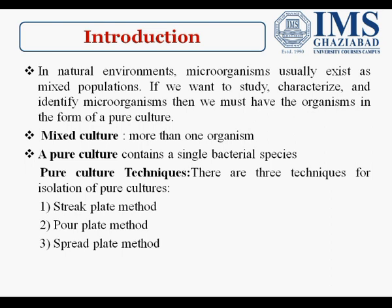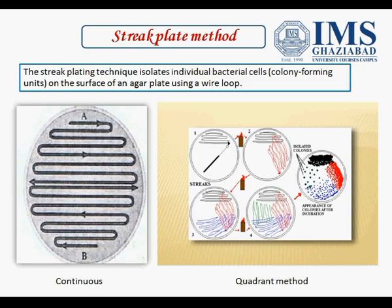Pure culture techniques have basically three methods: streak plate method, pour plate method, and spread plate method. The streak plating technique involves the isolation of individual bacterial cells on the surface of an agar plate using an inoculation loop. There are two types of streaking: one is continuous and the second is quadrant.